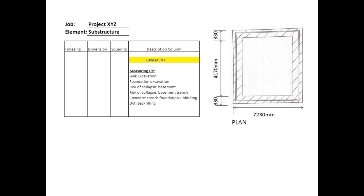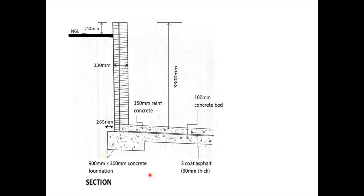On the right is our floor plan. We have a 7.23 by 4.83 meter basement when you account for the two 330 millimeter walls — so 470 plus 330 plus 330 gives the 4.83 meters. This is our section drawing showing the relevant depths: 214 millimeters above ground level, 3300 millimeters, a 150 millimeter reinforced concrete bed, 30 millimeter thick asphalt, 100 millimeter blinding, and a 900 by 300 millimeter concrete foundation. We also have a 285 millimeter projection of the concrete base beyond the wall face, and the wall is 330 millimeters thick.